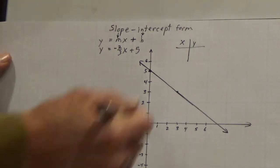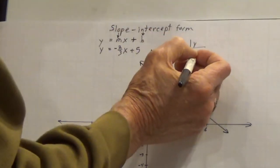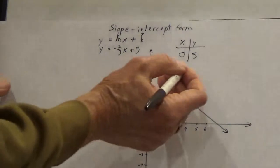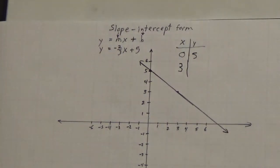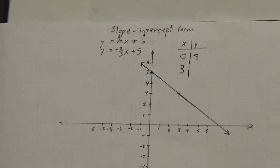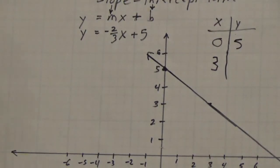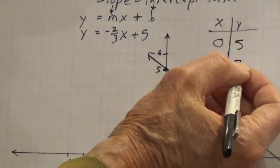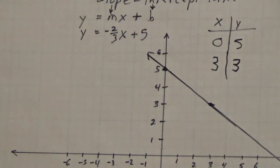Let's get a table to make sure. Let's use 0 here. If x is 0, negative 2 thirds times 0 is still 0, so y equals 5 — that was my y-intercept. Then let's use a multiple of 3, for example just 3, in order to get the denominator to cancel and get a whole number. The 3's will cancel and you'll get negative 2 plus 5 is 3. The point (3, 3), which is this point right here — which was on my graph.